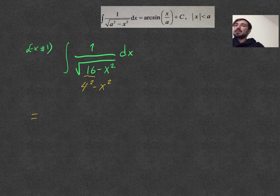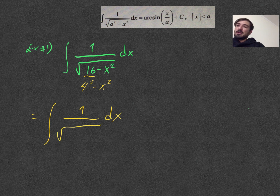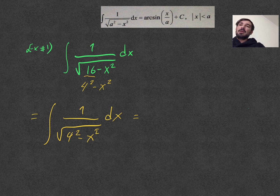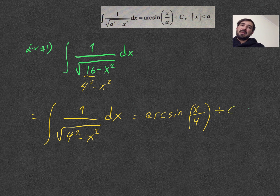So that's equal to — let's rewrite it: the integral of 1 dx over the square root of 4 squared minus x squared equals arcsin(x/4) plus C, where a equals 4.